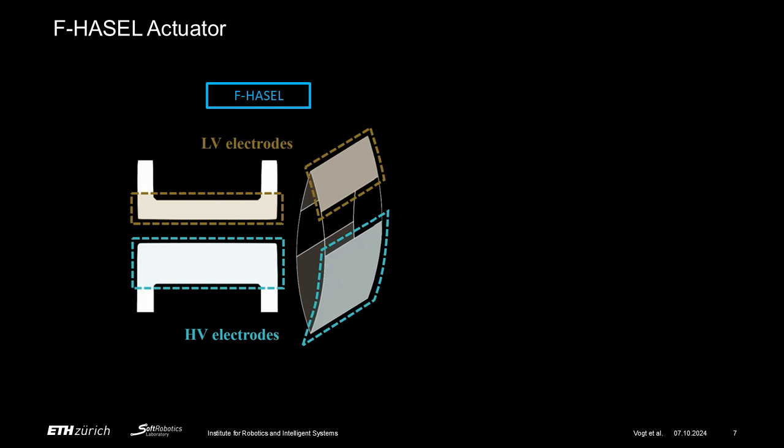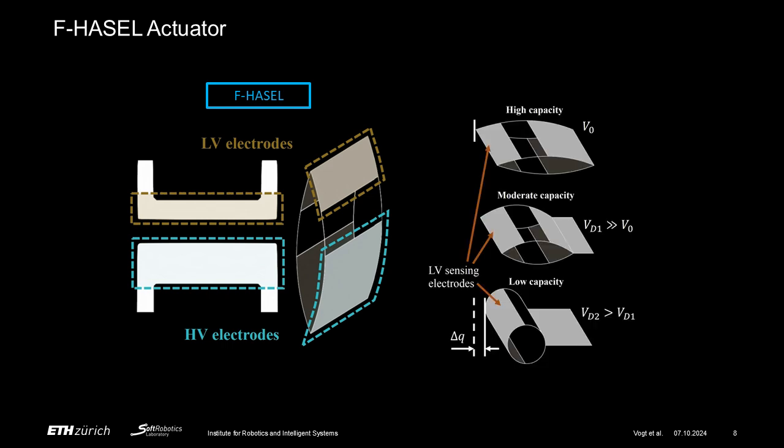To address these issues, we propose a new HASEL design, coined the Frog HASEL, F-HASEL for short, in which an additional pair of electrodes is added to a Peano HASEL on the opposite side of the electrodes used for high-voltage actuation. As shown here on the right, as the actuator contracts, the capacity between the additional pair of electrodes decreases.